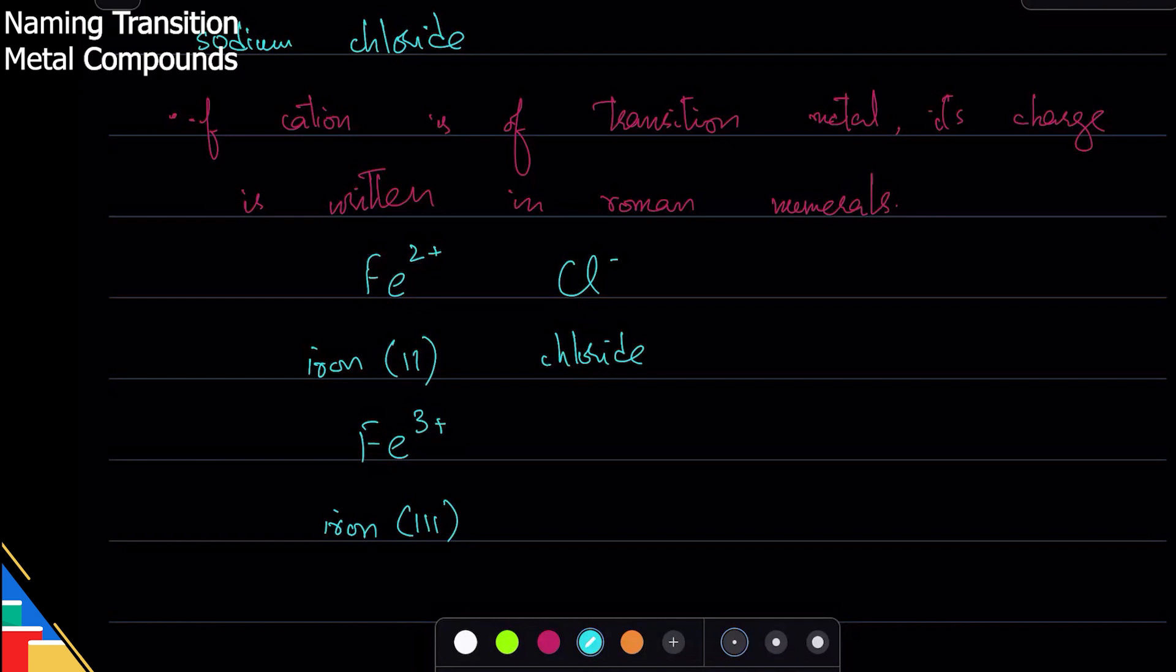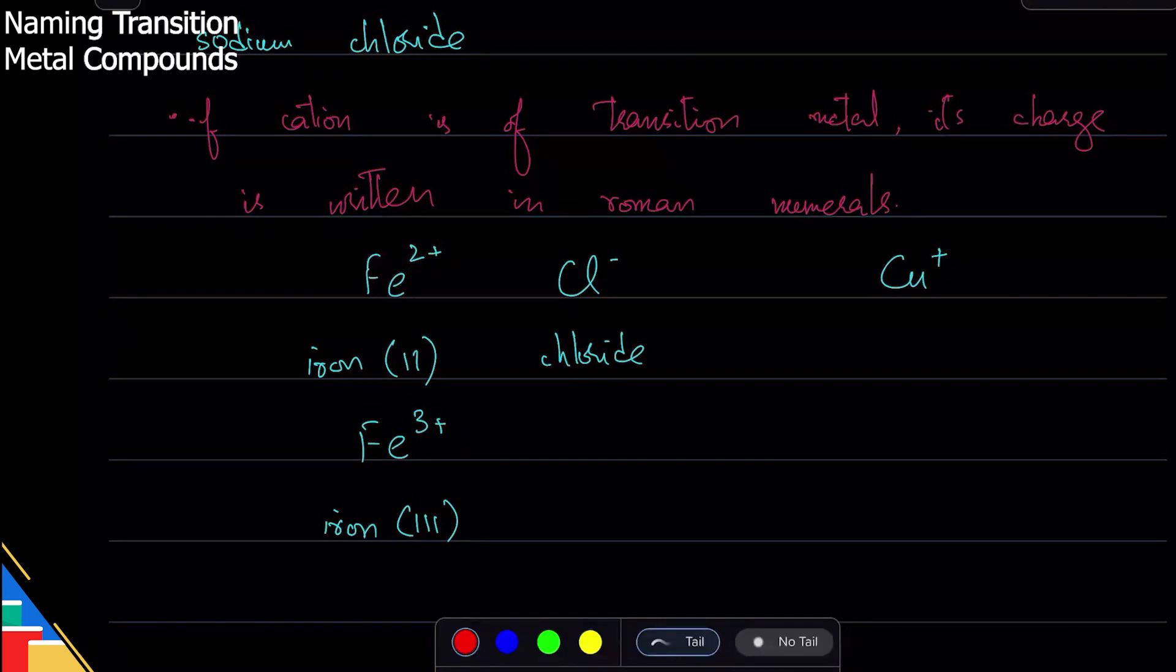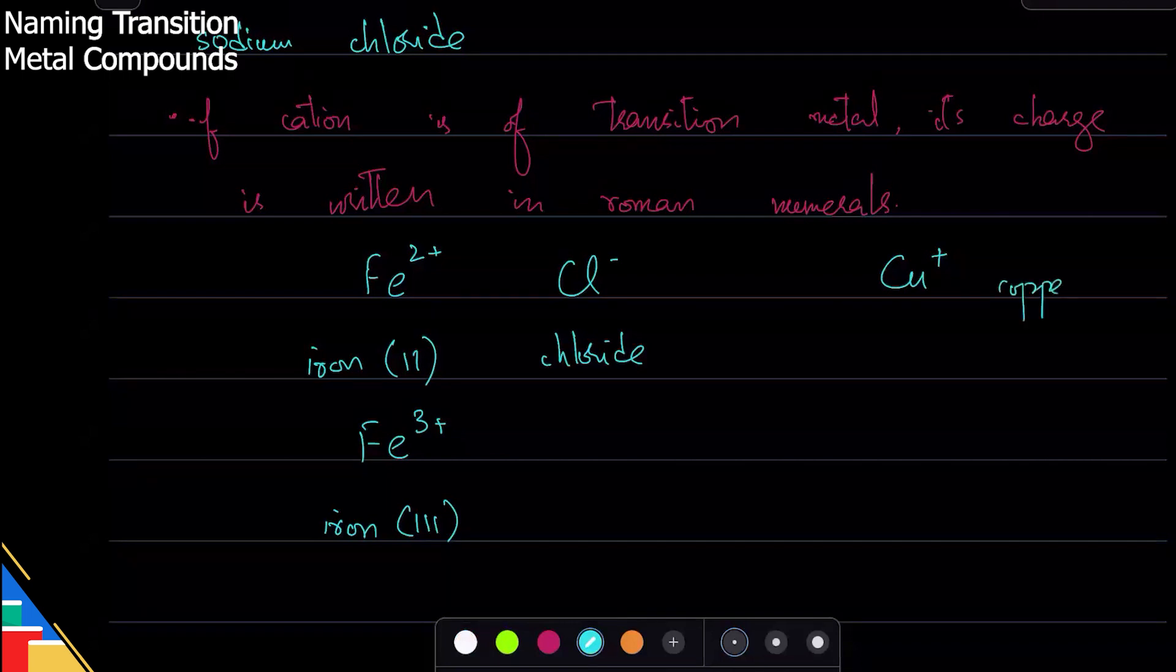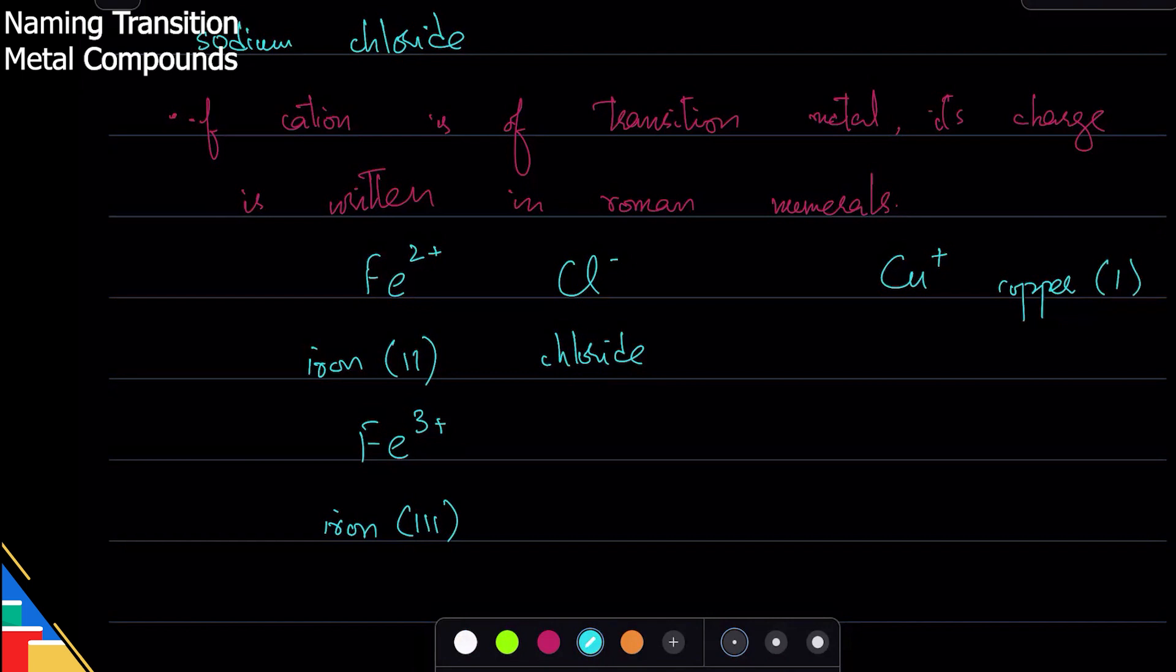Let's take an example. Can you tell me the name of this ion? It's copper, yeah, copper, good. It is copper, but it is also transition, so what should I write? Copper(I), yes, absolutely, very good. And this one? Copper(II), very good.